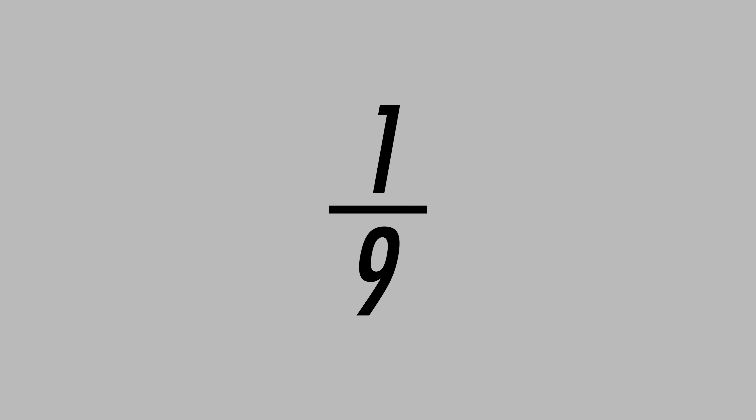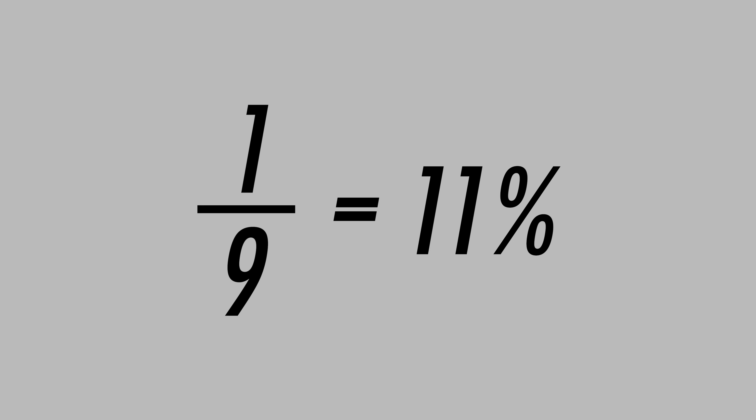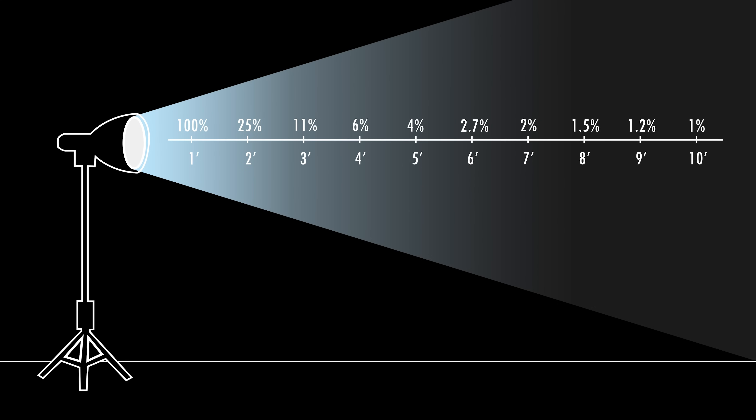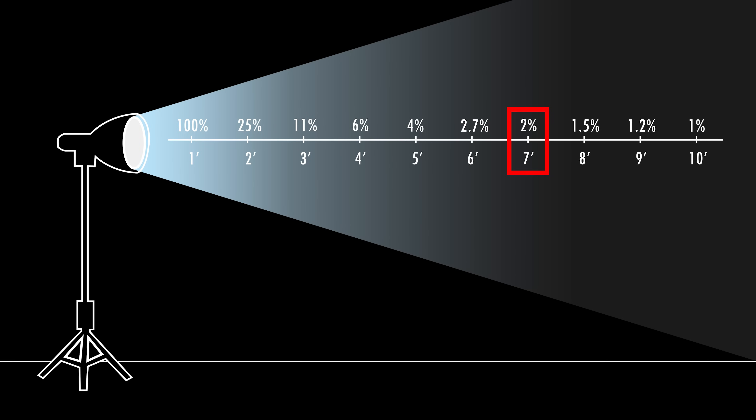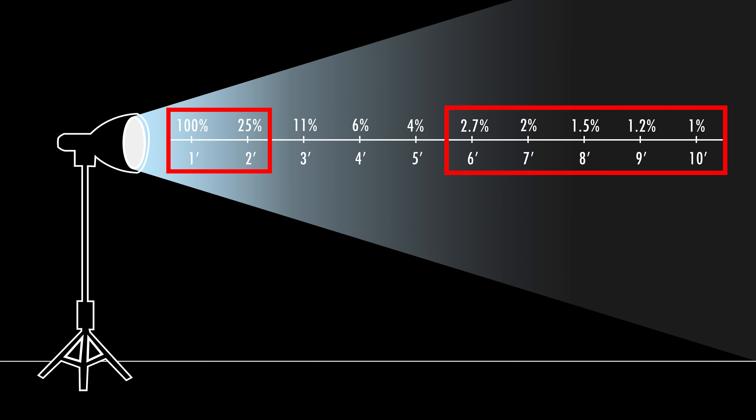Isn't that crazy? Doubling the distance doesn't cut the intensity of light down in half — it cuts it down three quarters. At three feet away, three squared is nine, so you have one ninth of the light, or 11%, and so on down until you get to 10 feet away. The further away you get from the light source, the lower the percentage of light fall off there is. There's not much difference between the 2% of light at seven feet away and the 1% of light at 10 feet away. Moral of the story: there is a huge light fall off between one and two feet, but not that much the further away you get from the light source.